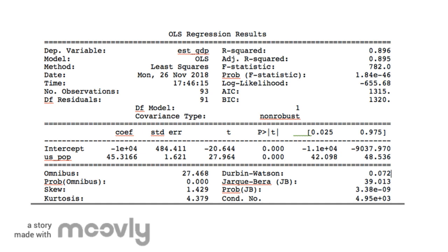Regressing Estonian GDP on US population, we get the following regression results. The R-squared value is very high at 0.896. The t-statistics are also extremely high at 20.644 and 27.964, and the subsequent p-values are zero.